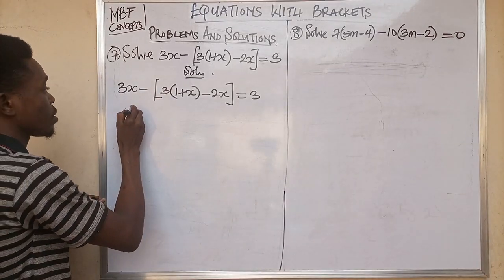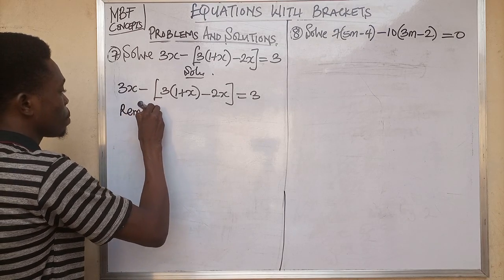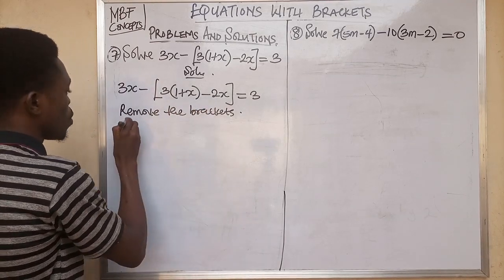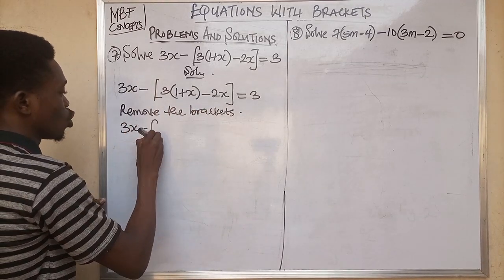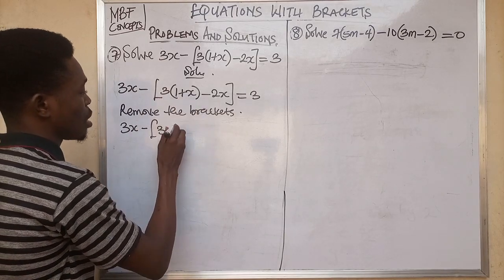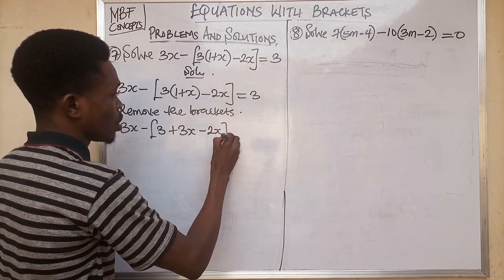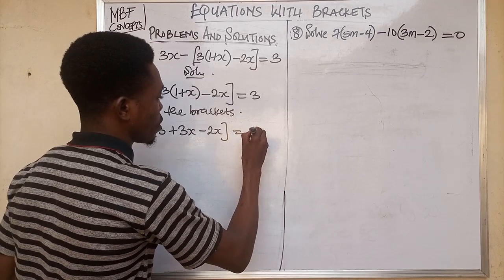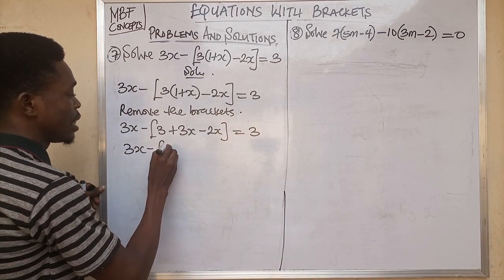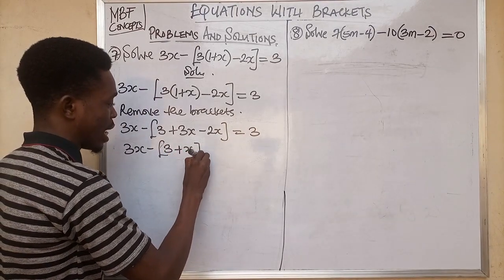Removing the inner bracket gives us 3x minus open bracket — 3 times 1 gives us 3, and 3 times x gives us 3x, then minus 2x — inside the big bracket, equal to 3. So next we have 3x minus open bracket (3x minus 2x), and 3x minus 2x gives us 1x, so 3x minus x equals 3.